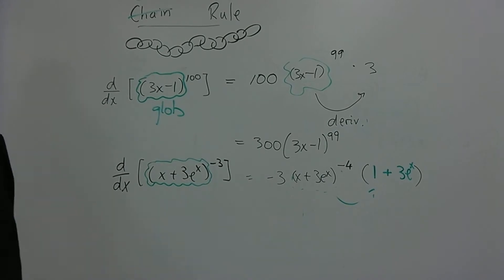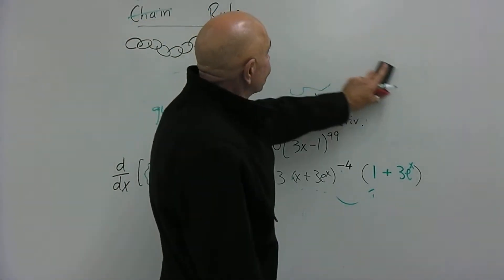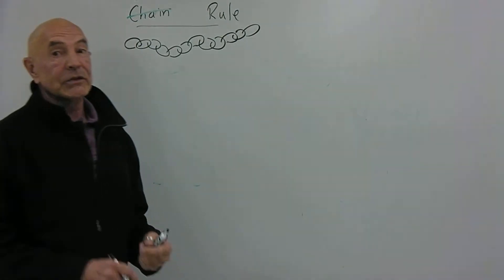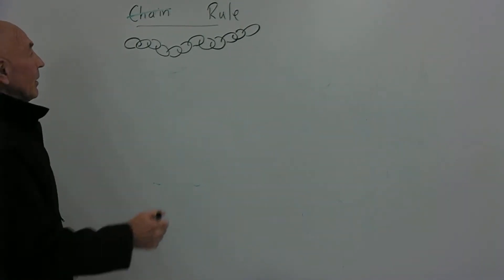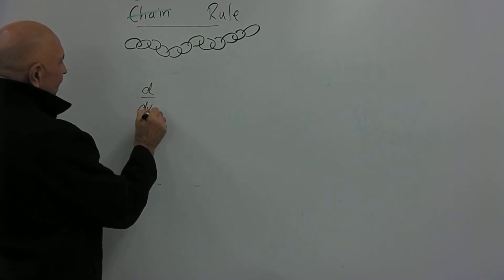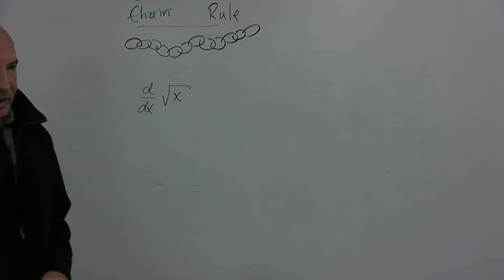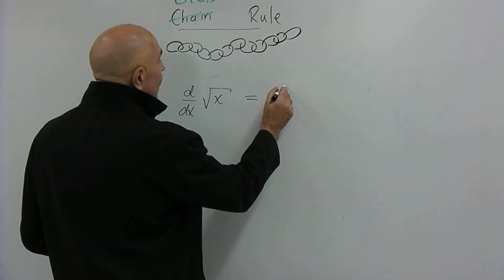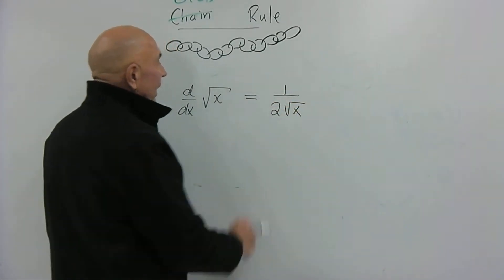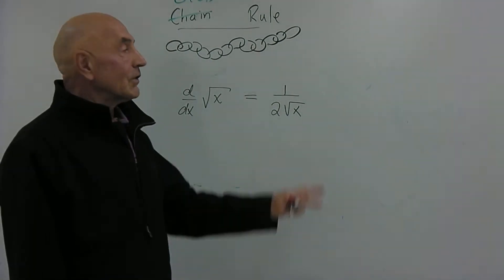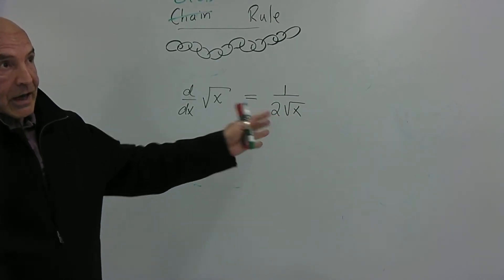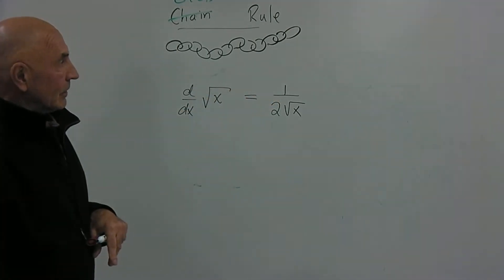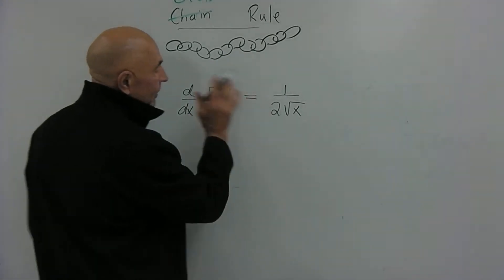Let's try one more example — this time with the square root. Many students like to write the square root of x as x to the one-half, but there's a nicer way to write the derivative. Since it's one-half x to the negative one-half, you can write it as one over twice the square root of x. That's much cleaner — no fractional or negative exponents — and it's easier to work with in equations.